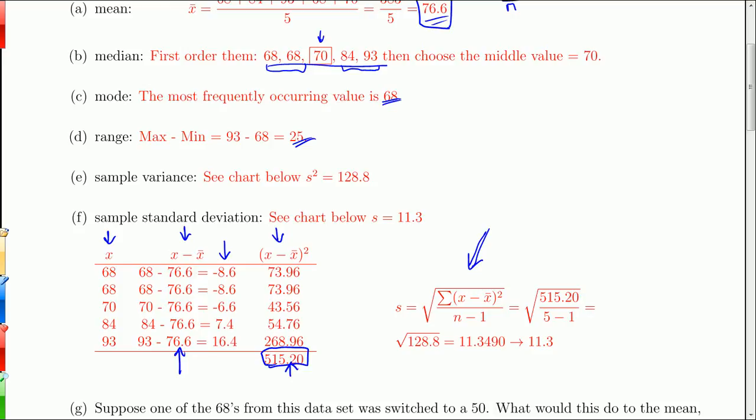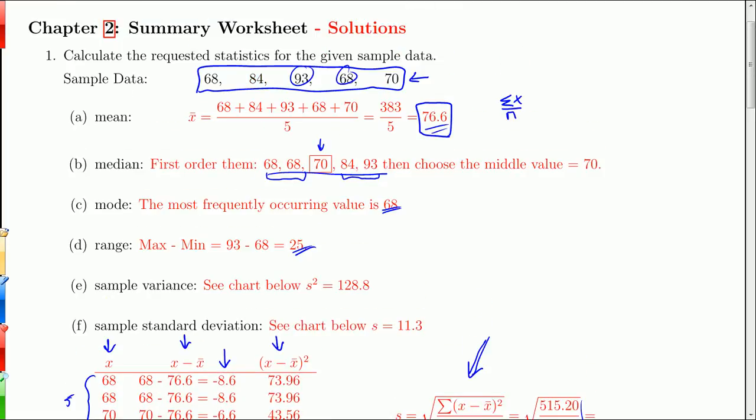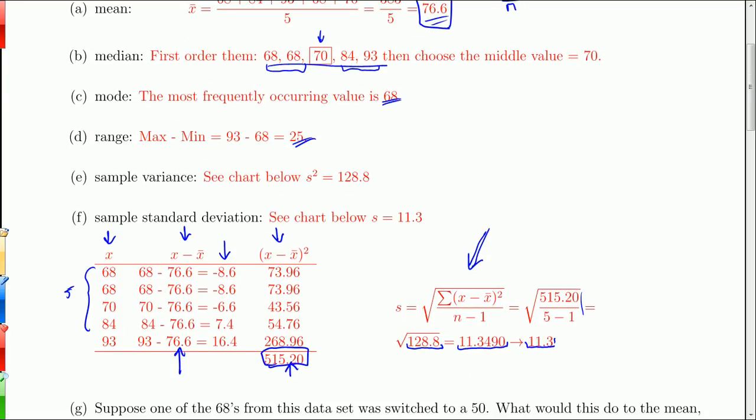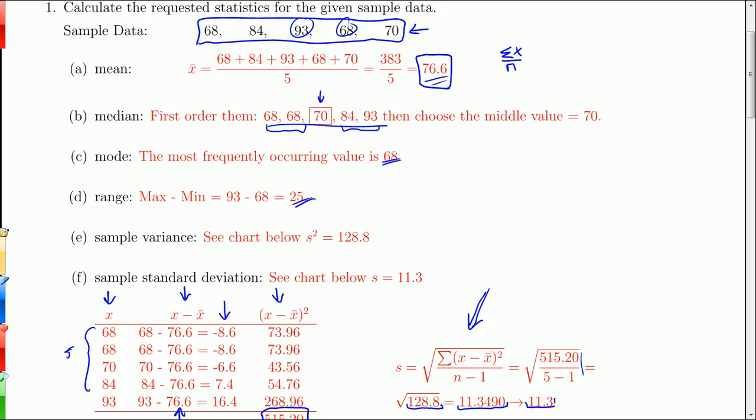So when we stick that into our formula, we get 515.20 here. And then we divide by the sample size. And there's 5 here, right? So we have 5 minus 1. So there's the formula. And when you take 515.2 divided by 4, you get the 128.8. And then you take the square root of that. You get 11.3490. We round that to 11.3, because we're going to one more decimal place. The raw data was whole numbers, no decimal places. So one extra decimal place is one decimal place. By the way, that's what we did with the mean, too. Mean was one decimal place as well.